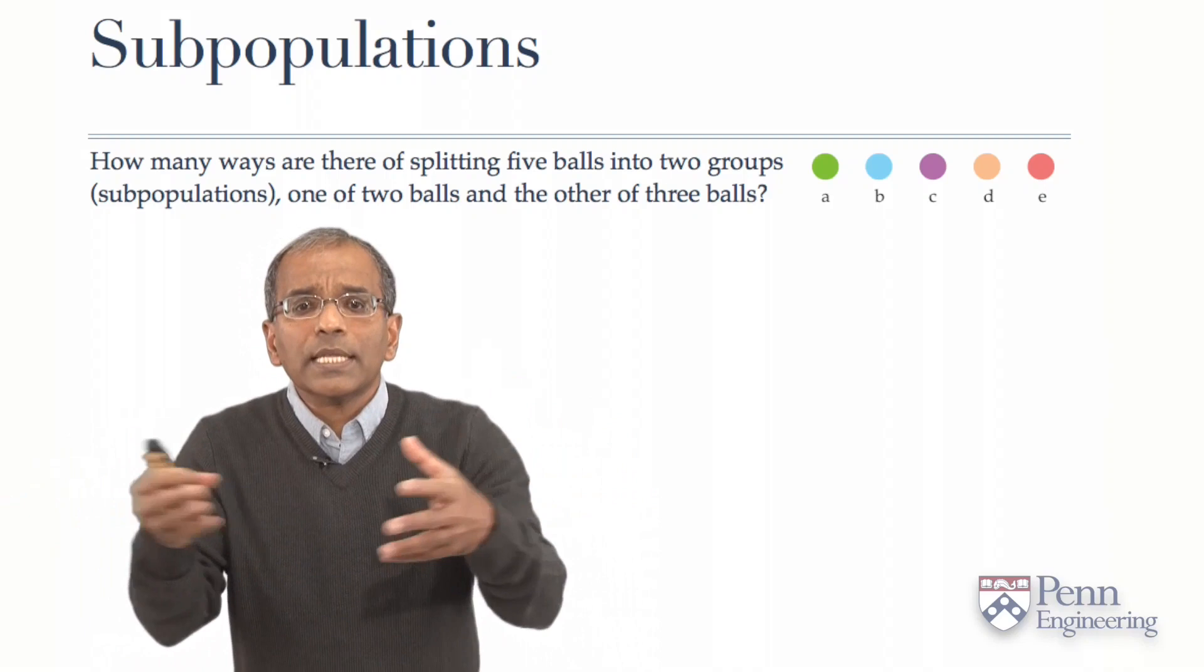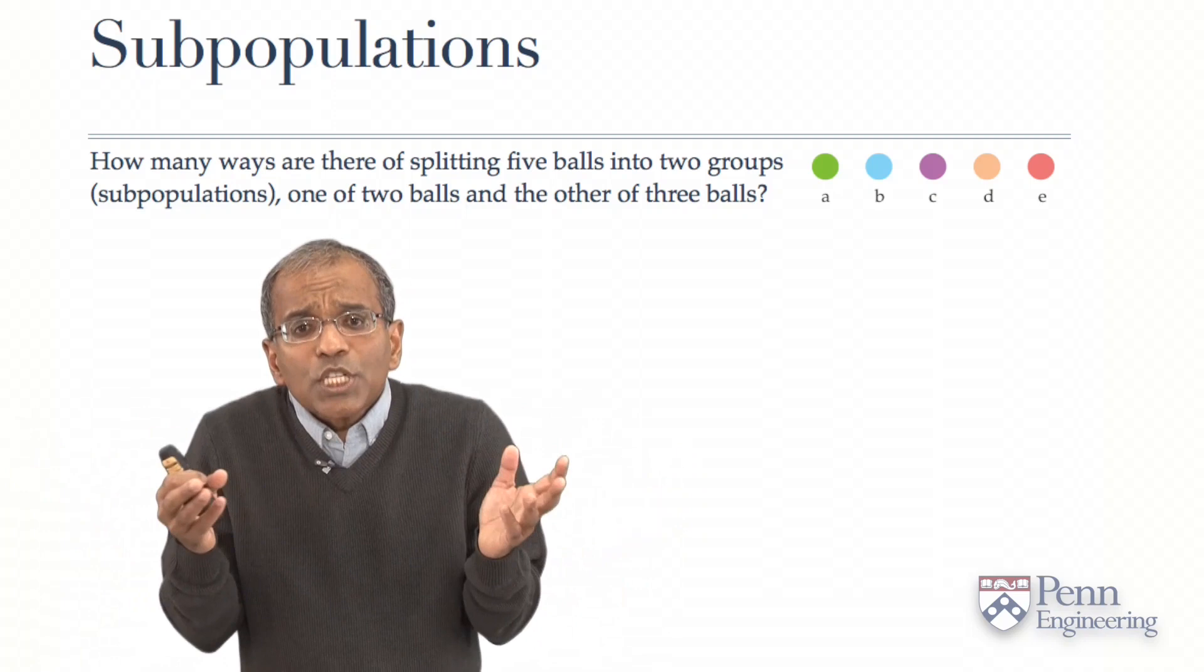So, let's start with a very simple example. Let's go back to a ball metaphor. Let's say we have five balls. I've given you five different colors.